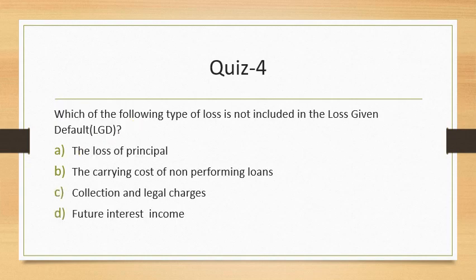Question 4: Which type of loss is not included while calculating loss given default? Loss of principal is definitely included, and carrying cost of non-performing loans is also included. Collection and legal charges are included. However, we do not include future interest income while calculating LGD, because it is measured at a point in time and only accumulated interest up to that point is considered.